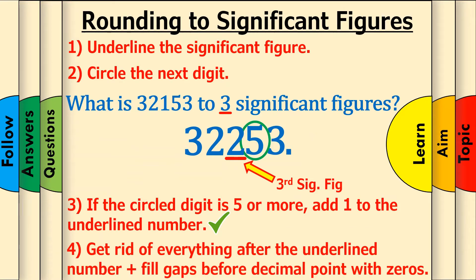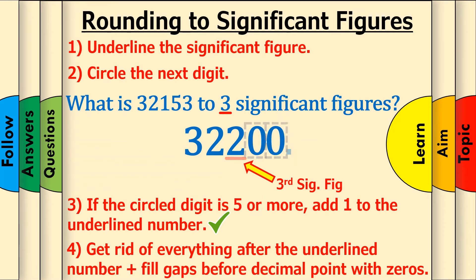Step 4: Get rid of everything after the underlined number. This creates a gap of 2 digits before the decimal point, so fill them with zeros, like this. We're left with the final answer of 32,200.